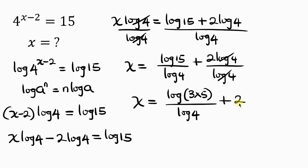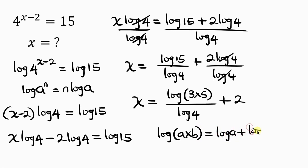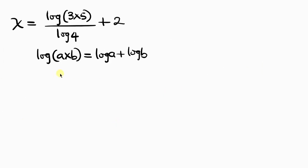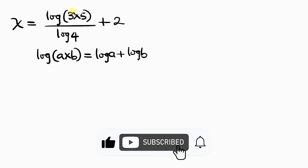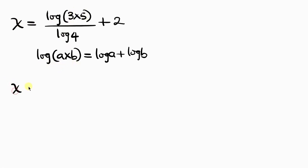Our next step will be to apply another property of logarithm which says: log(a × b) = log a + log b. Applying this to the numerator, x equals (log 3 + log 5) / log 4, plus 2.